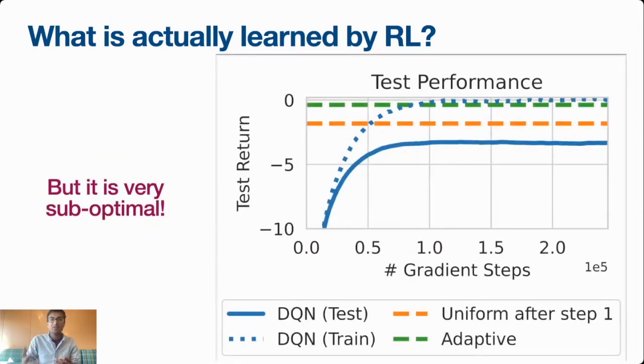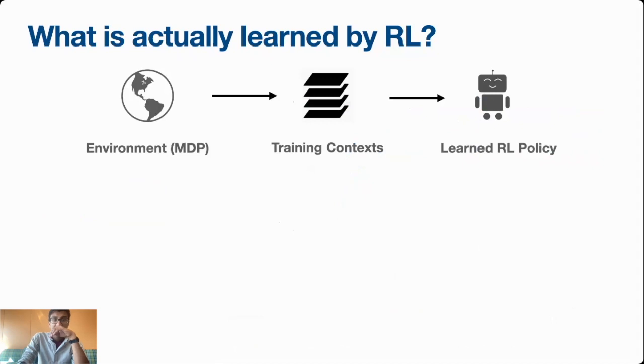But we can see in this problem that this is actually very suboptimal. In fact, if we want to generalize well, we should change our strategy once we see that our original action was incorrect. This might seem a little surprising because at the beginning I said this is an MDP. Why are adaptive or random guessing strategies here in the green and orange outperforming my RL algorithm?